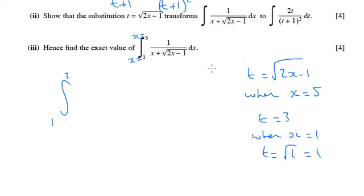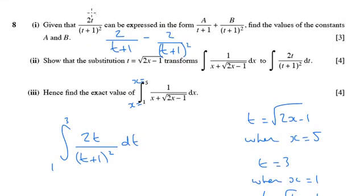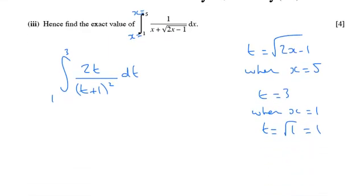We've already turned it into an expression in terms of t instead of x. Now we need to integrate this. But why did they ask us part 1? We know that part 1 can be rewritten using partial fractions. We can't integrate this the way it looks, but we can integrate its partial fractions form. So let's integrate that instead.